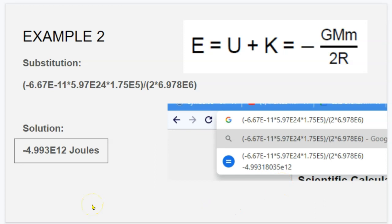This is the sum of kinetic and potential energy of minus 4.993 times 10 to the 12th joules. That is a lot of energy. But if you think about it, you have a very large satellite orbiting pretty far from the earth, so there's a lot of energy being thrown around there.